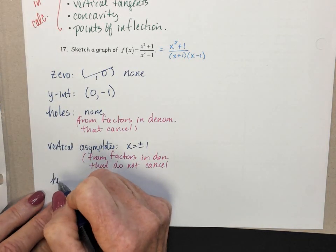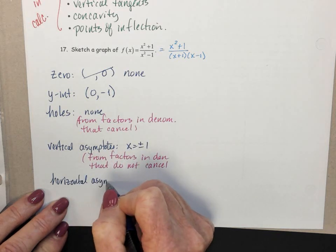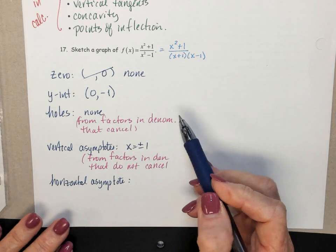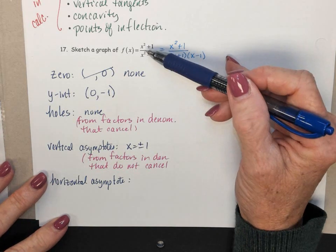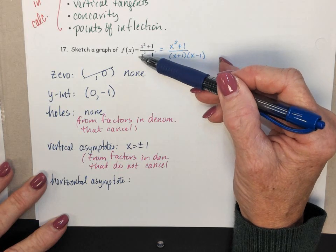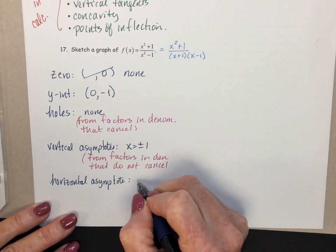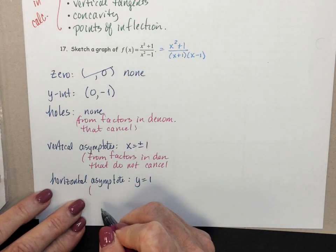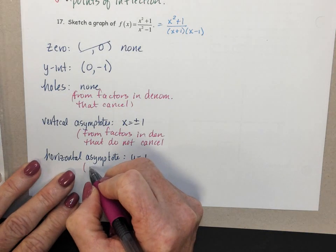Horizontal asymptote. That's going to be when you're going to compare degree in the numerator with degree in the denominator. So the degree in the numerator is exactly the same as the degree in the denominator. So we take the fraction of the leading coefficients, in this case, which would be 1. So our horizontal asymptote is at y equals 1. And again, we're getting that horizontal asymptote by comparing the degree in the numerator with degree in the denominator.